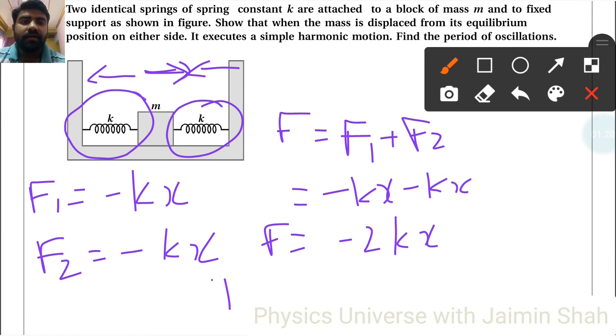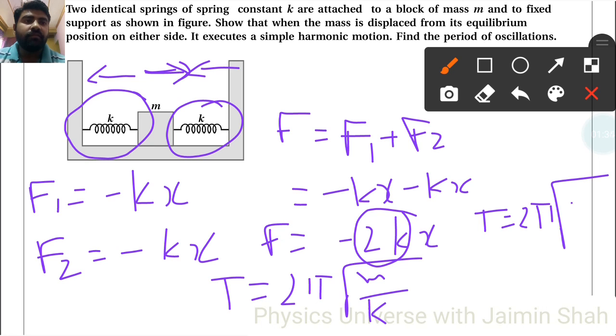Now time period. Here we have considered that formula is 2π under root m upon k, but here because of formula we have that value is 2k, right? So T is equal to 2π under root, that formula is m upon 2 into k here.